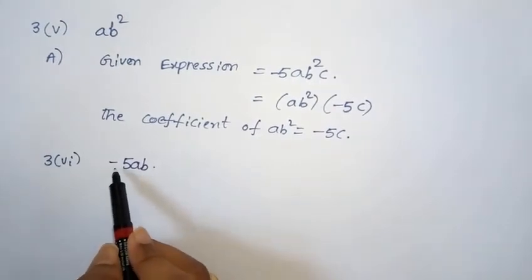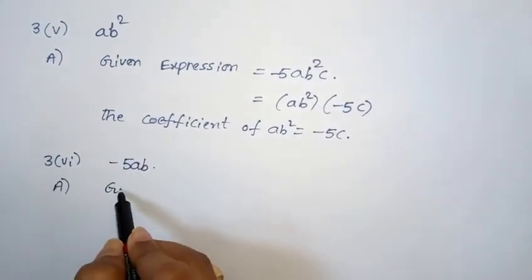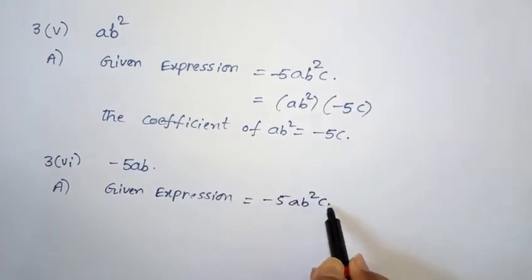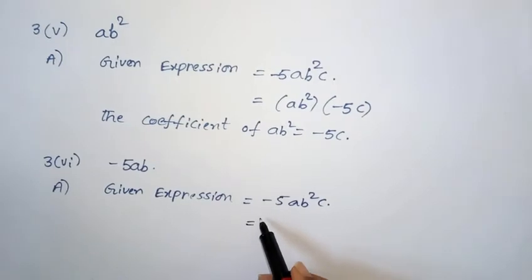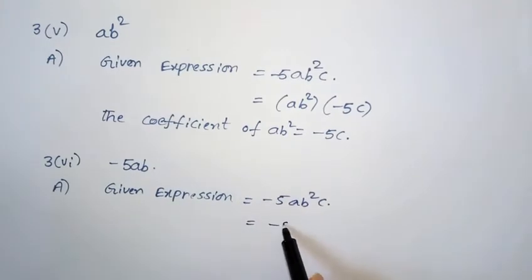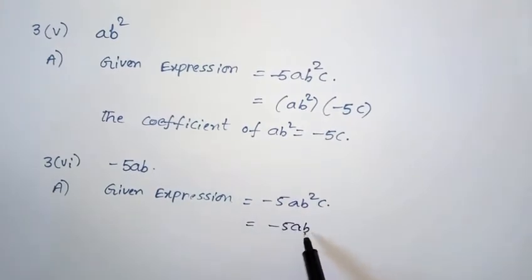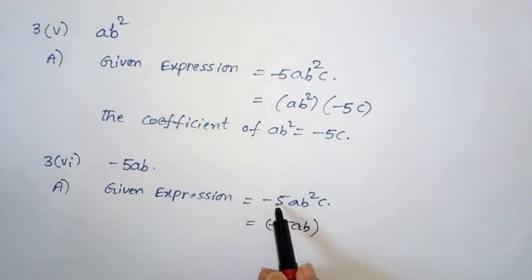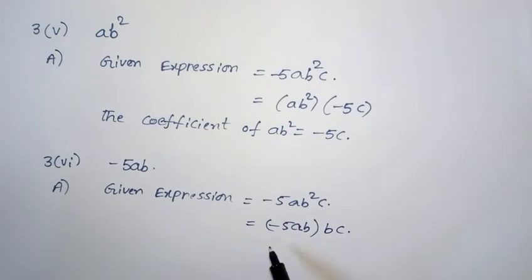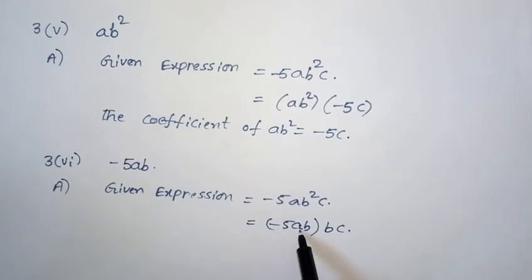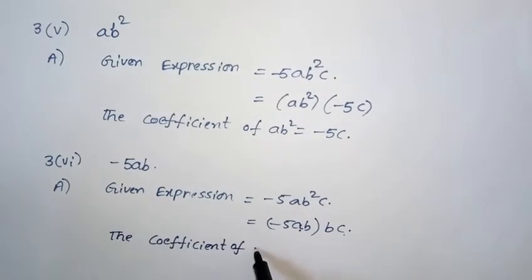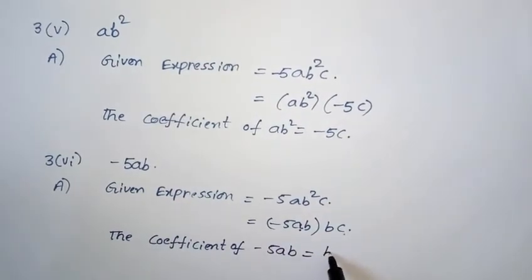Third problem, sixth one: find the coefficient of minus 5ab. Given expression is minus 5ab²c. Minus 5ab is common, so remaining is b and c. So the coefficient of minus 5ab is equal to bc.